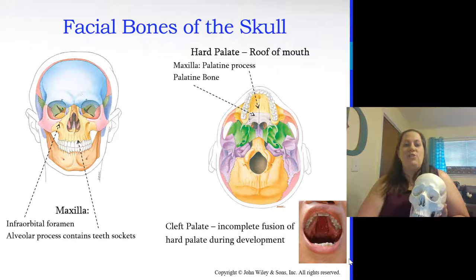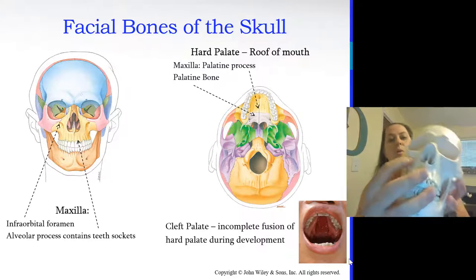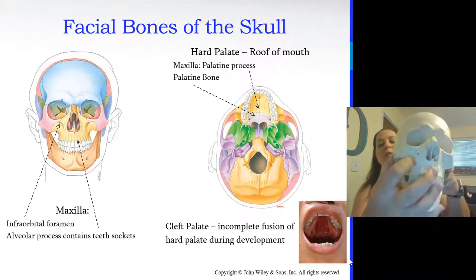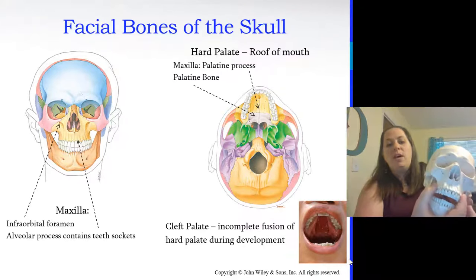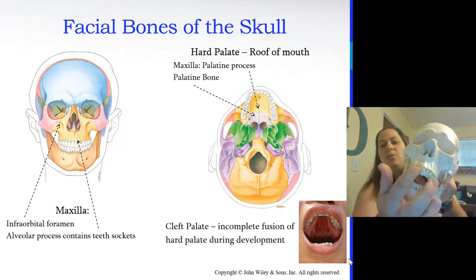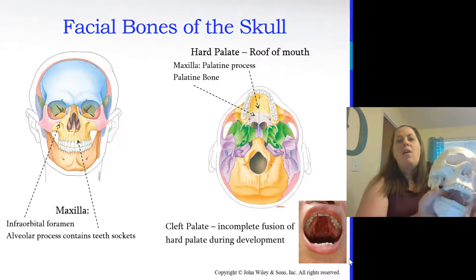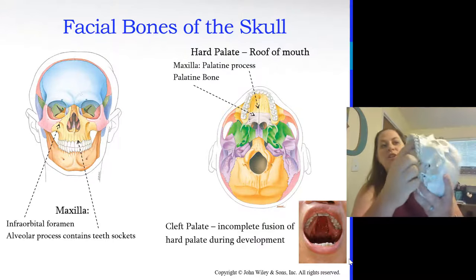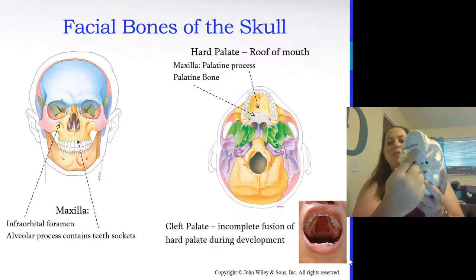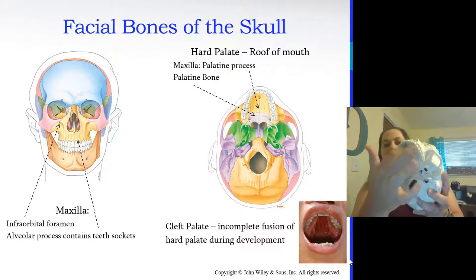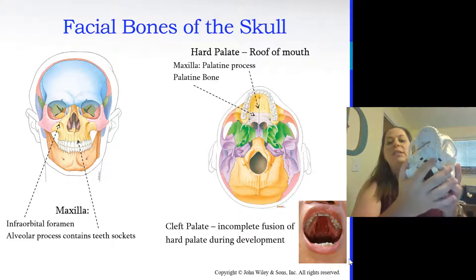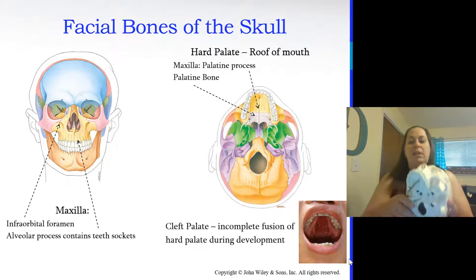The maxilla has the infraorbital foramen — a small hole allowing blood vessels and nerves to pass through. It also has alveolar processes containing tooth sockets. The hard palate, the roof of your mouth, is partially the maxilla with its palatine process, which meets back to the palatine bones. When these don't fuse completely, it's called a cleft palate — an incomplete fusion creating an opening from the mouth into the nose.